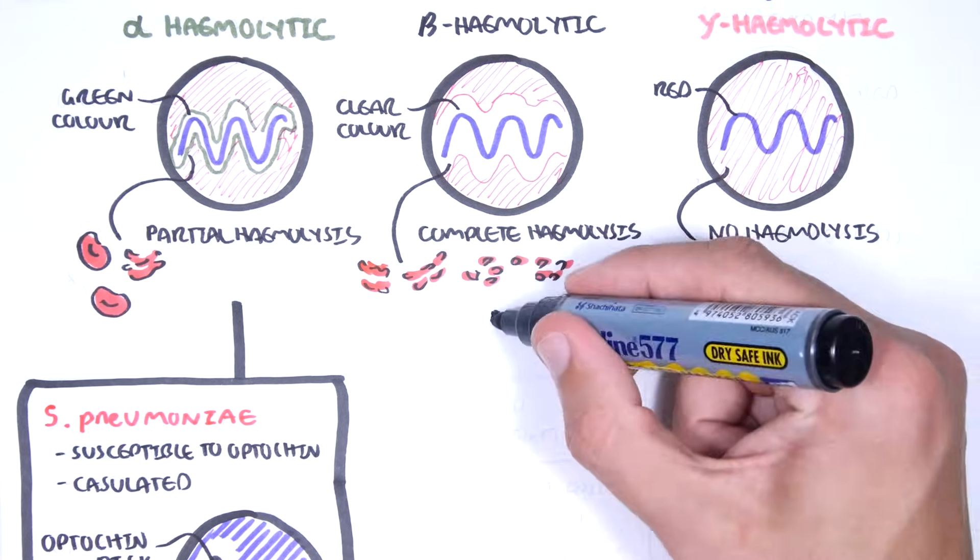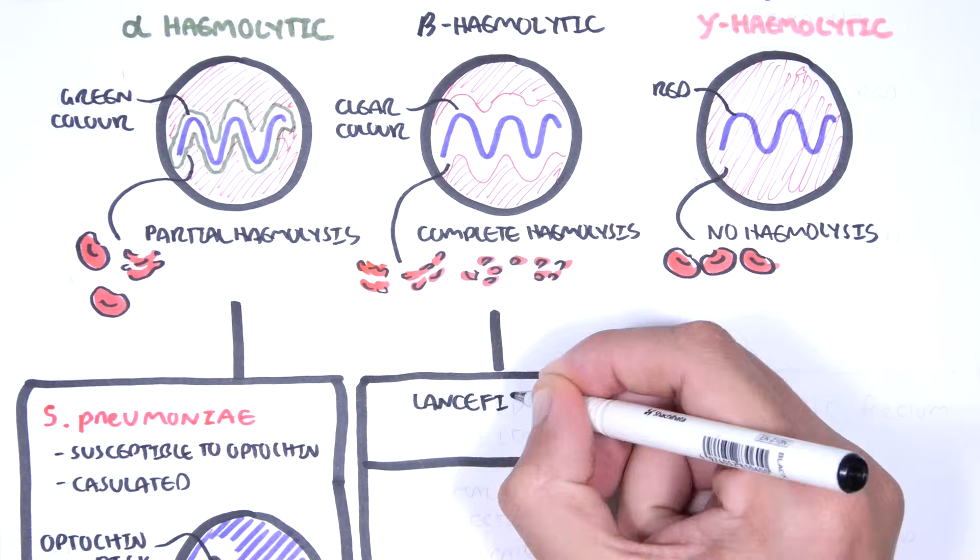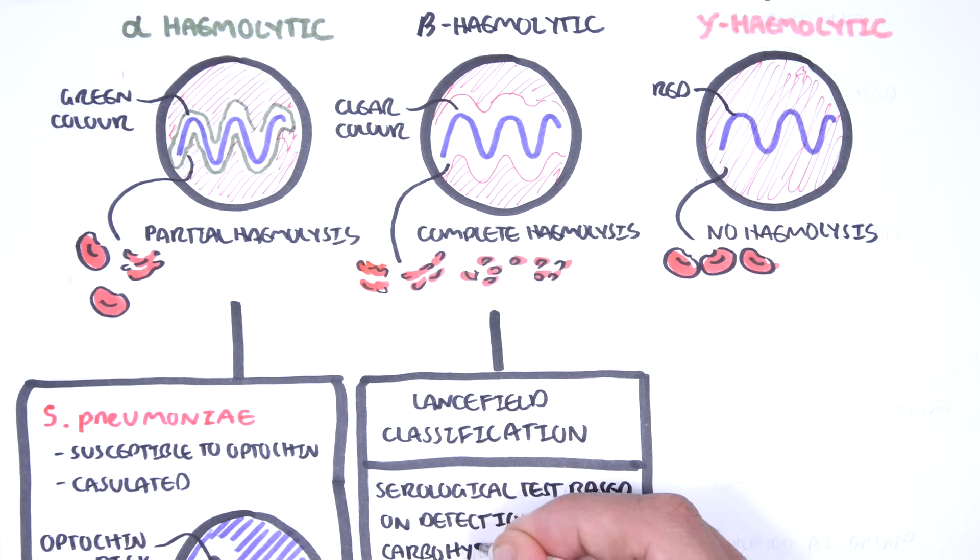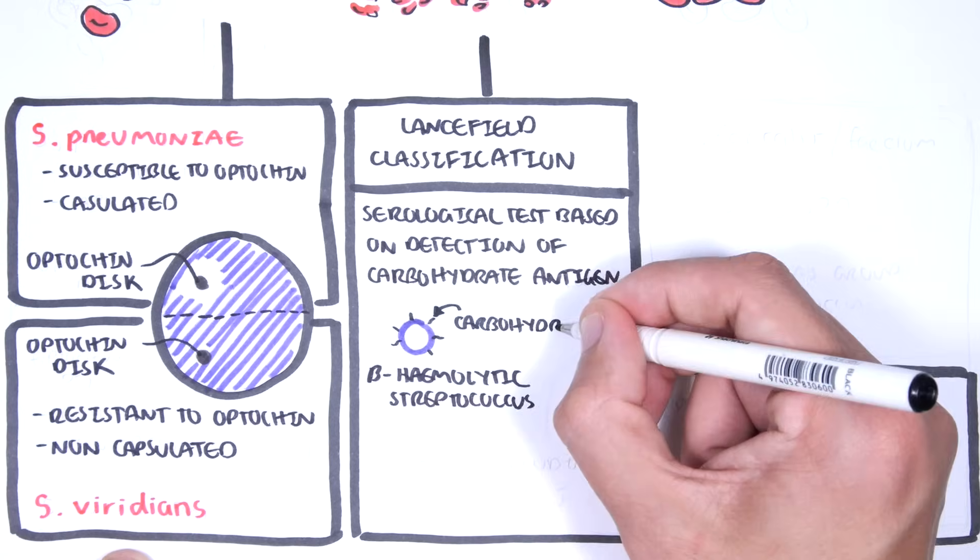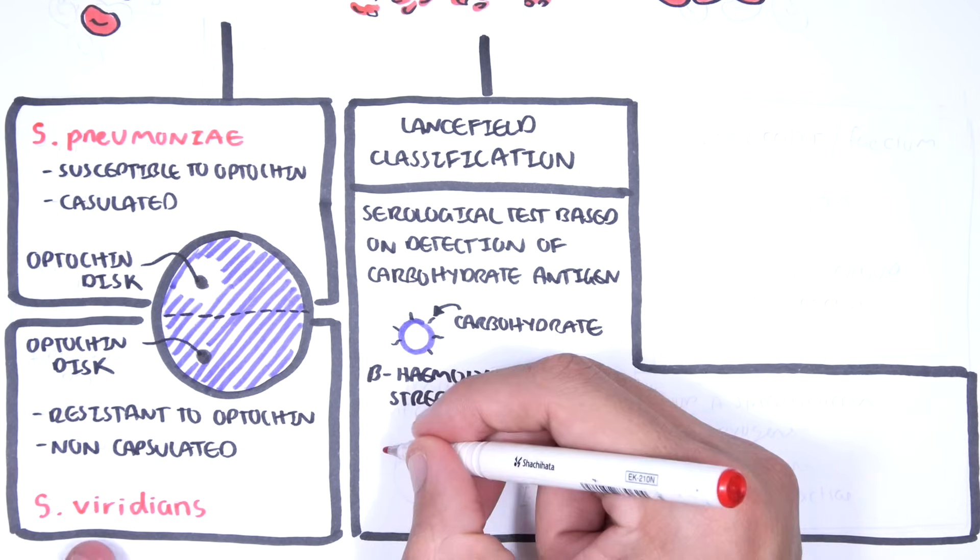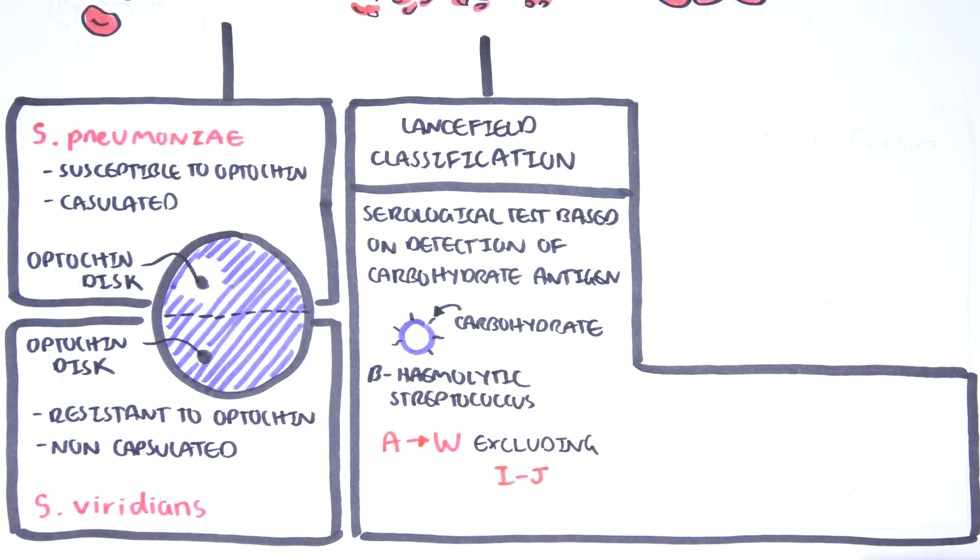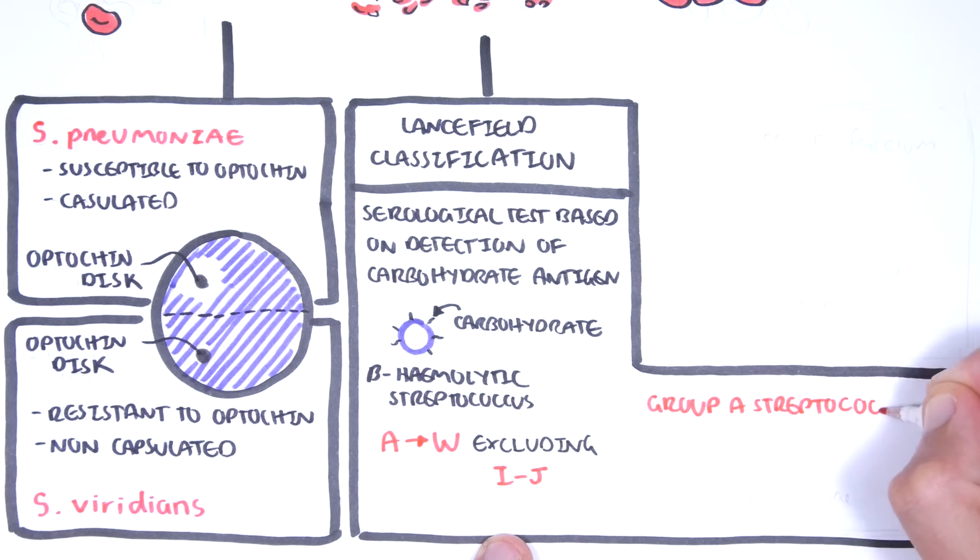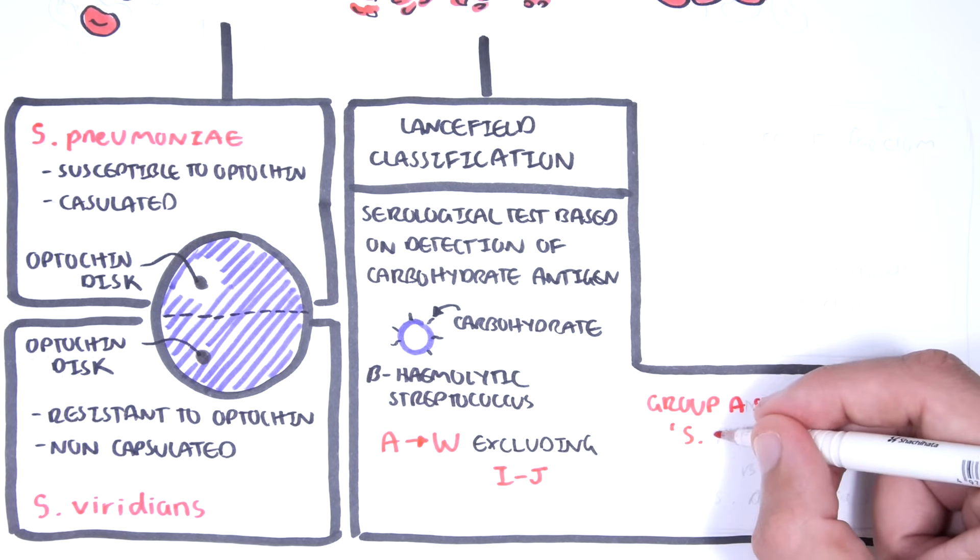The beta hemolytic streptococci are further classified based on antigenic structure. This is the Lancefield classification. The antigenic structure is a serological classification system and is based on the detection of specific carbohydrate antigens on the cell wall of the streptococci. The Lancefield classification includes basically groups A to W, with the exception of I and J. For example, the majority and one of the most important human pathogens belong to group A in the Lancefield classification. These are called the group A streptococci, also known as streptococcus pyogenes.